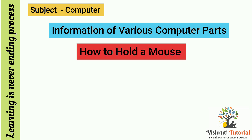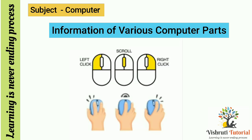Let's see how to hold a mouse. To hold a mouse: first, put your index finger on the left button. Second, put your middle finger on the right button. Third, hold the mouse with the rest of the fingers and rest your palm on the mouse.